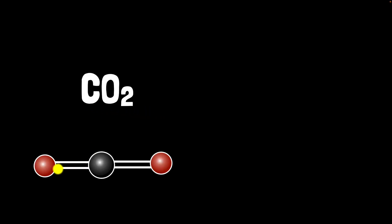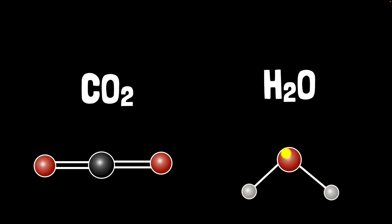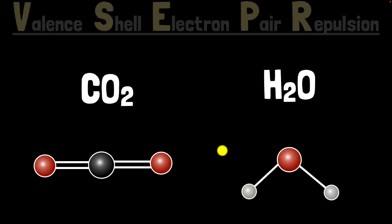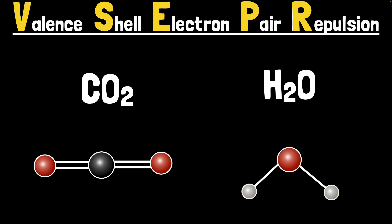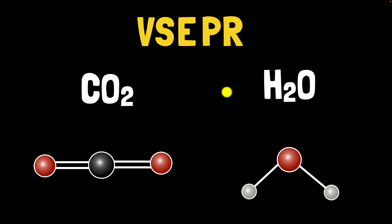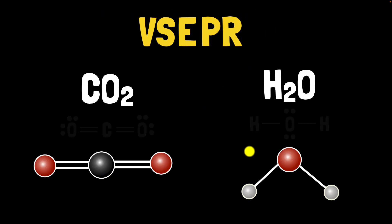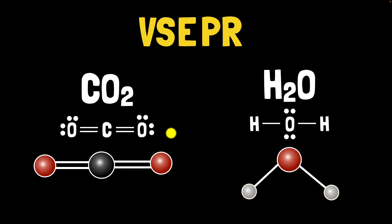A molecule of carbon dioxide is pretty much straight, whereas a molecule of water is bent. Why the difference? And more importantly, is there a way to predict what the shape looks like in three dimensions of any molecule? The answer is yes, by using a theory called Valence Shell Electron Pair Repulsion theory, or VSEPR for short. VSEPR is going to help us predict the shapes of different molecules by using their Lewis structures.